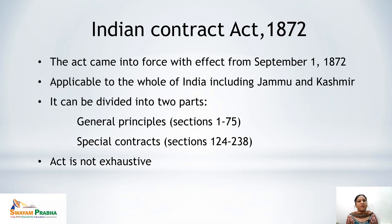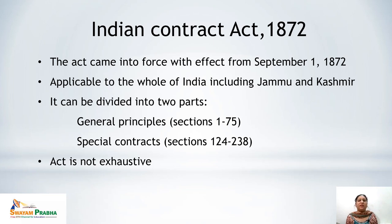Before knowing about the Indian Contract Act 1872, it is important to know what the subject is. The subject includes two words: business and law. Law is the rules and principles governing some action. Business law is a branch of law which relates to business. It comprises the Sale of Goods Act, Partnership Act, as well as the Indian Contract Act 1872.